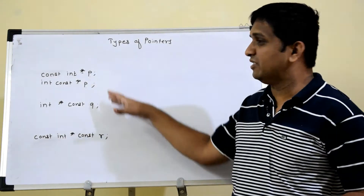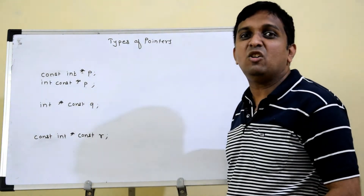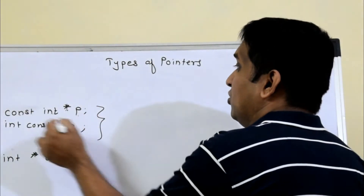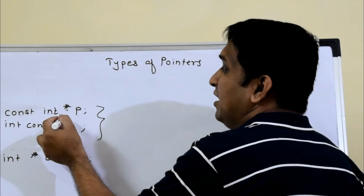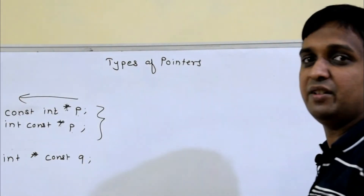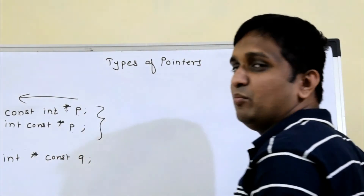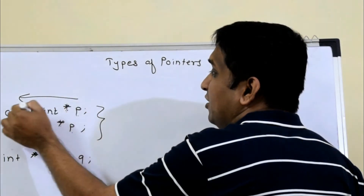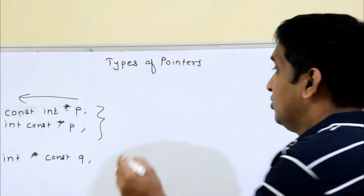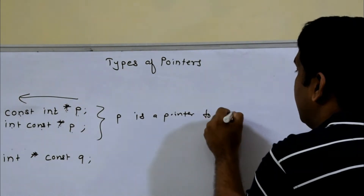Using the const keyword, I can declare pointers. Here are some declarations using const keyword to declare pointers p, q, and r. Depending on where you write the const keyword, the interpretation of each declaration will differ. For the first declaration, const int asterisk p or int const asterisk p, the meaning of both is the same. You need to read this declaration from right to left. So p is a pointer to integer constant, or p is a pointer to constant integer — both are the same.